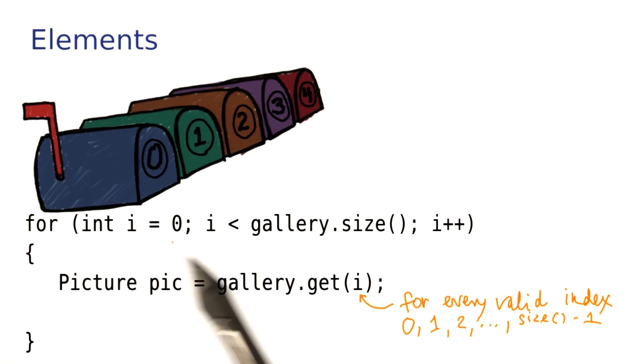So this is the classic loop to traverse all of the elements in an ArrayList. i takes every legal index value. For each i, we get the element stored in the ArrayList, and then we do something with that element. You'll get to try that right now. Go ahead and write a loop that draws every picture in the gallery.